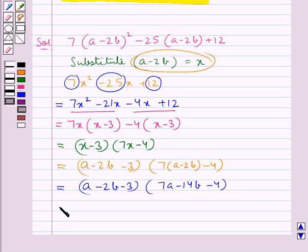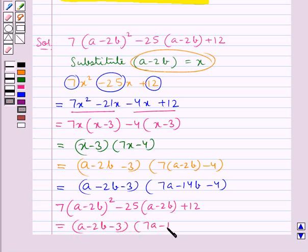Thus we have 7(a-2b)² - 25(a-2b) + 12 = (a-2b-3)(7a-14b-4).